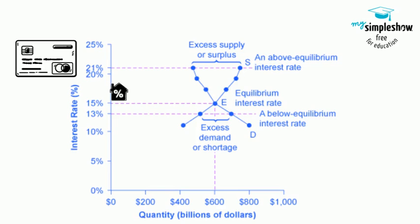The equilibrium price is where the quantity demanded and the quantity supplied are equal. At an above-equilibrium interest rate like 21%, the quantity of financial capital supplied would increase to $750 billion, but the quantity demanded would decrease to $480 billion. At a below-equilibrium interest rate like 13%, the quantity of financial capital demanded would increase to $700 billion, but the quantity of financial capital supplied would decrease to $510 billion.